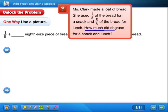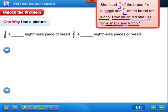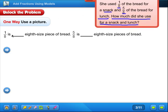So how much did she use for a snack and lunch? So you are going to add them together. 1 eighth, that was her snack. And 5 eighths was her lunch. Alright, I'm going to scoot mine over so we can see what it says here. 1 eighth is blank eighth size piece of bread. It is 1 eighth size piece of bread.